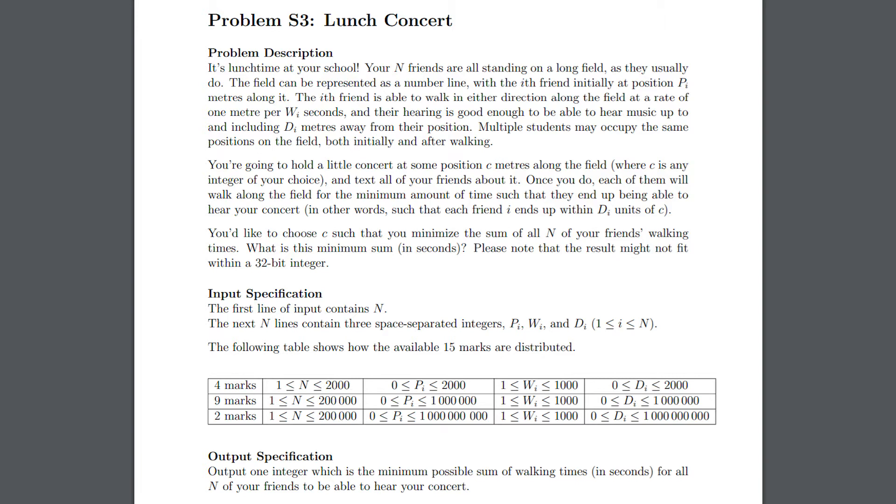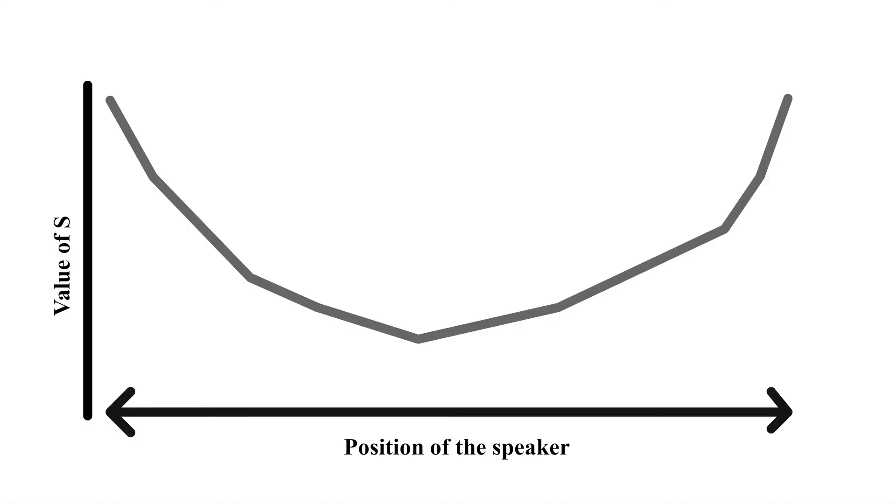Given a point on the line where you put your speaker, let's call the total sum of your friends' walking time S. So our goal is to find the point that minimizes S. For our purposes, we will use an algorithm to calculate S using a basic O of N algorithm, simply looping through all of your friends and calculating how long it will take them. This seems like it would be too slow, but the key is to realize something about the graph of S. If I were to graph S at every point in the number line, it would look something like this.